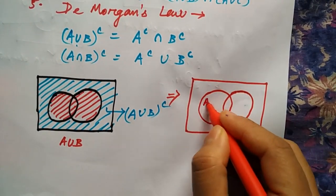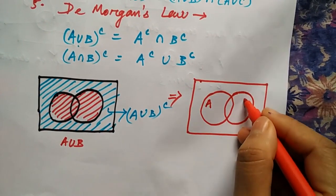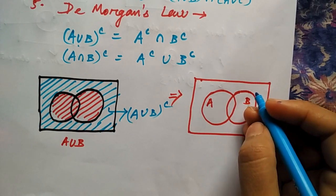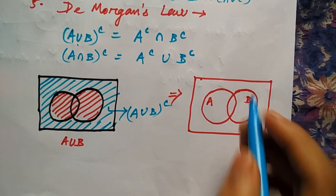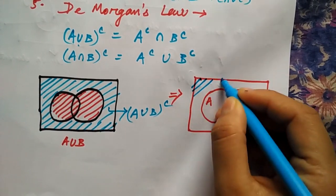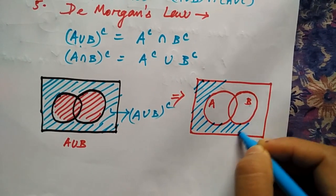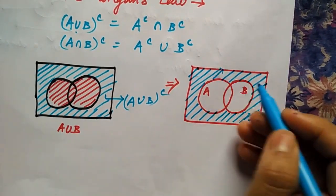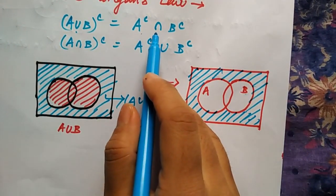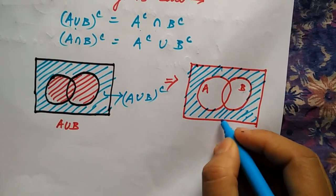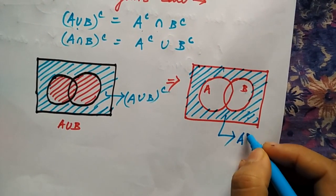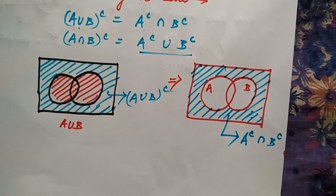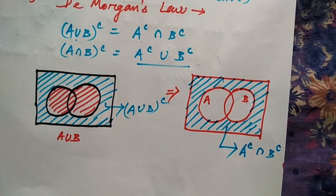If this is A, then A complement is everything outside A. If this is B, then B complement is everything outside B. So A complement and B complement share the same elements, and when you take the intersection of A complement and B complement, you get that same shaded region — confirming A complement intersection B complement.